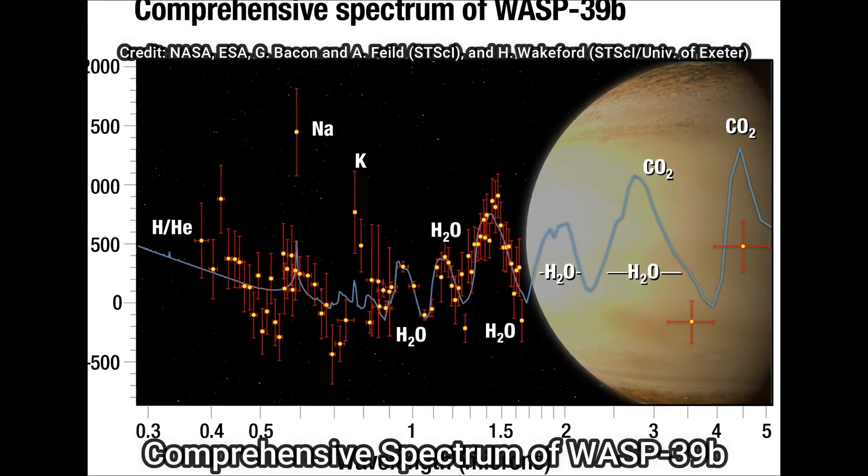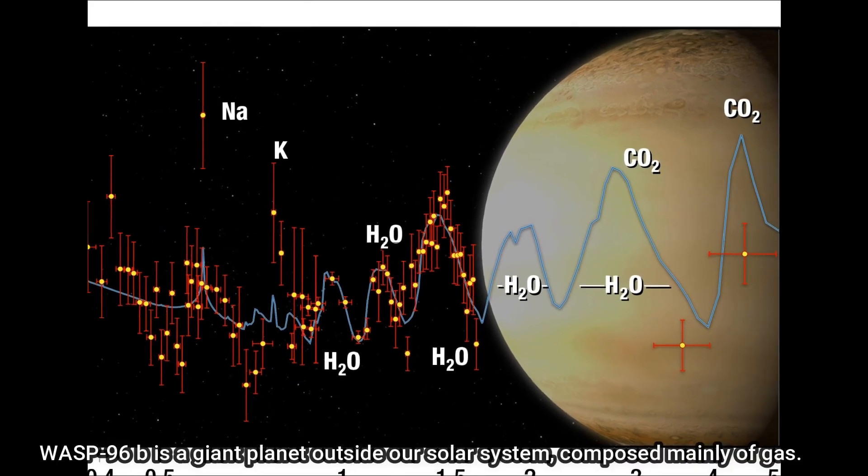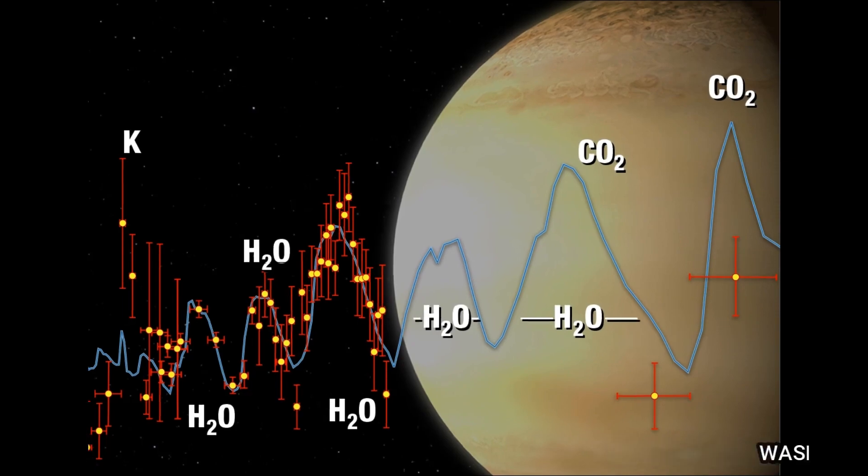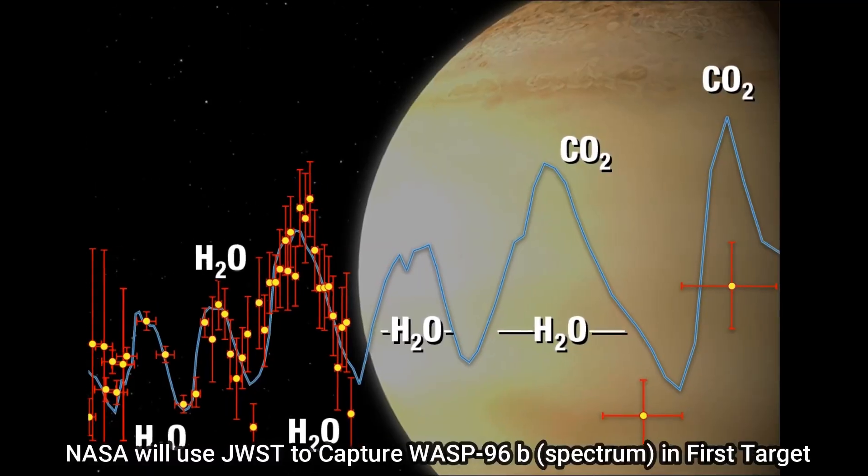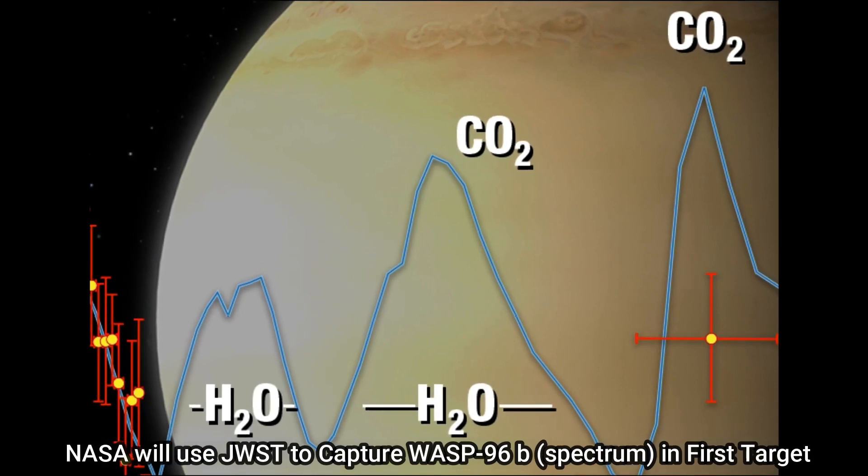The spectrum of WASP-96b captured by NIRISS is not only the most detailed near-infrared transmission spectrum of an exoplanet atmosphere captured to date, but it also covers a remarkably wide range of wavelengths, including visible red light and a portion of the spectrum that has not previously been accessible from other telescopes—wavelengths longer than 1.6 microns in this example.